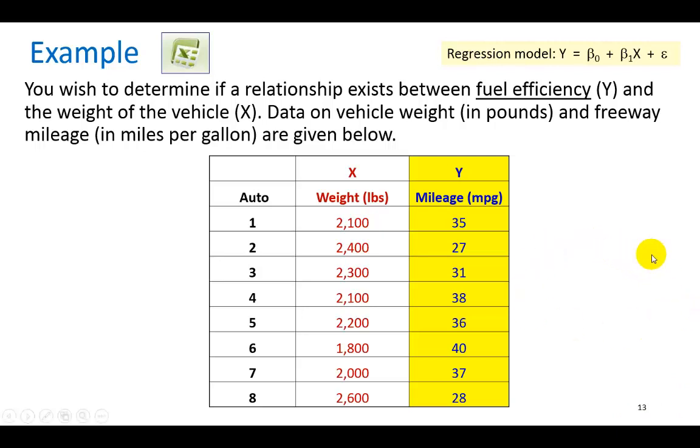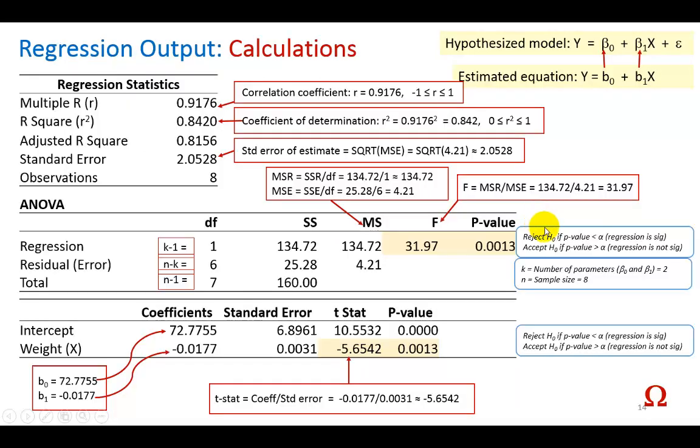We used these two variable data sets to obtain the regression result shown right here. There are three sections of regression output. At the top, we find some descriptive statistics. The middle section here, under ANOVA, shows analysis of the two aspects of variation associated with the dependent variable Y in this regression.